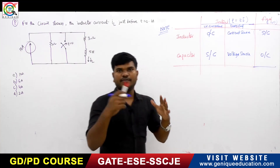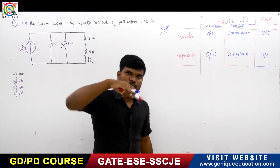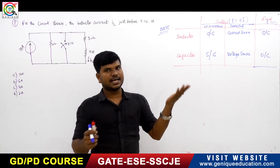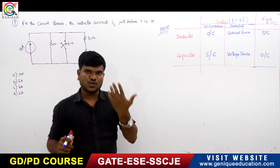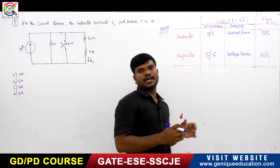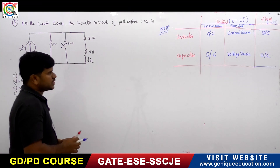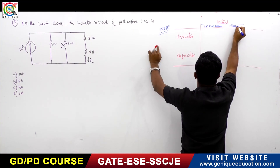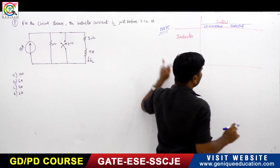You can easily find whether it is energized or unenergized. Before the switching, if the inductor is connected to any source, it is called energized. If the inductor or capacitor is not connected to a source before the switching, it is called unenergized. This is the thing you have to understand and focus on.